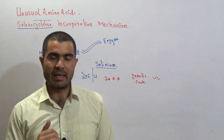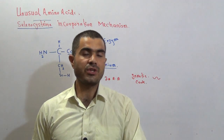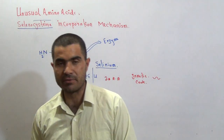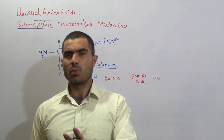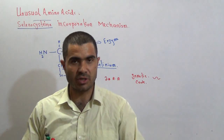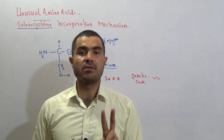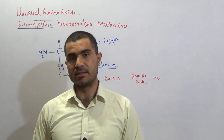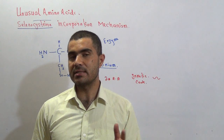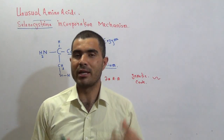Before we come to the mechanism, I would like to tell you that there are 20 amino acids from which the body proteins are made. These 20 amino acid structures and names have already been discussed in one of my video lectures. Among these 20 amino acids — which we also call standard amino acids because they are present in the protein of not just the human body but other animals as well — out of these 20, we have recently discovered two more amino acids. These two are given special names: one is selenocysteine and the other is pyrrolysine, and they are very specifically incorporated into protein by a wonderful mechanism.